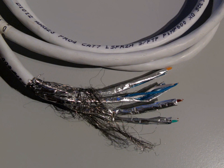Class EA link channel up to 500 MHz using Category 6A cable connectors. Class F link channel up to 600 MHz using Category 7 cable connectors. Class FA link channel up to 1000 MHz using Category 7A cable connectors.